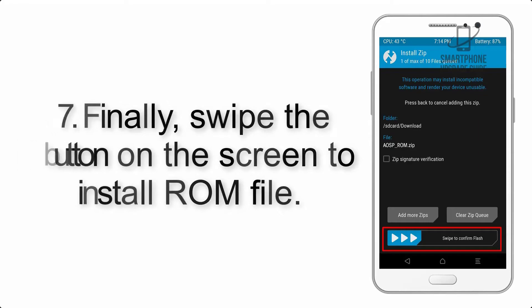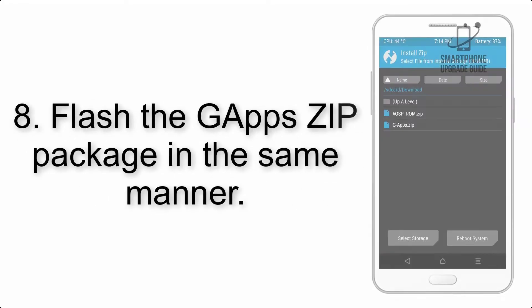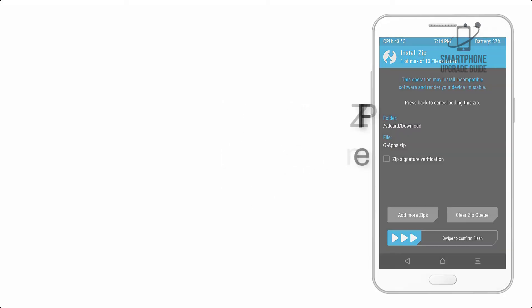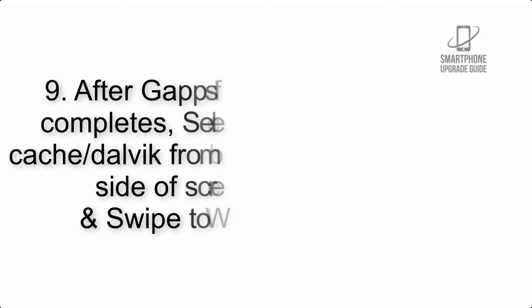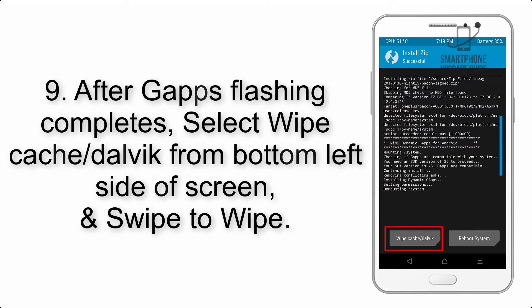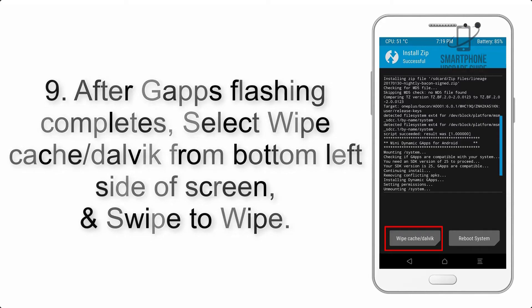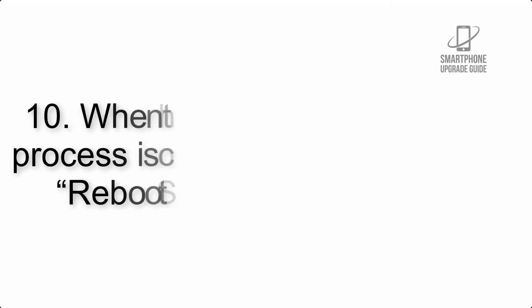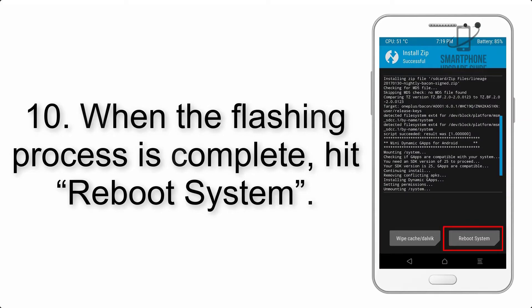Step 8: Flash the GApps zip package in the same manner. Step 9: After GApps flashing completes, select Wipe Cache and Dalvik from the bottom left side of the screen and swipe to wipe.